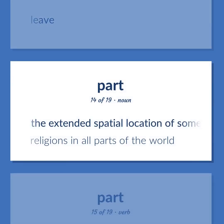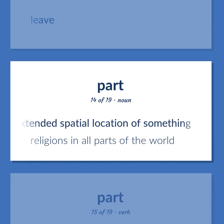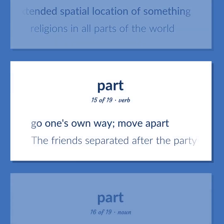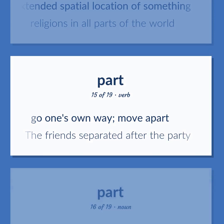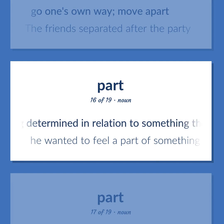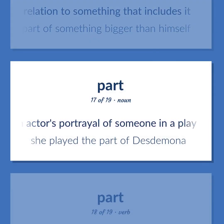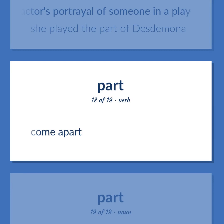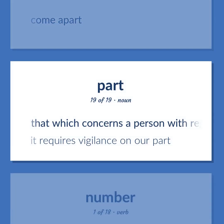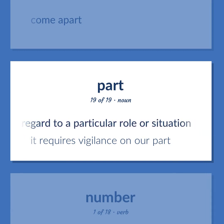Leave. The extended spatial location of something — religions in all parts of the world. Go one's own way; move apart — the friends separated after the party. Something determined in relation to something that includes it — he wanted to feel a part of something bigger than himself. An actor's portrayal of someone in a play — she played the part of Desdemona. Come apart. That which concerns a person with regard to a particular role or situation — it requires vigilance on our part.